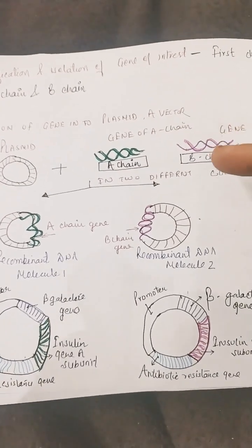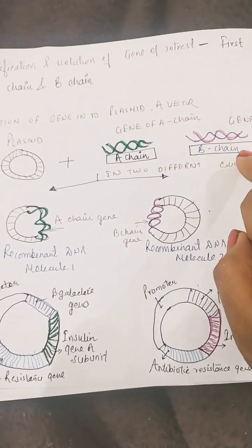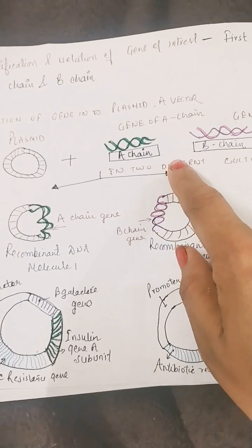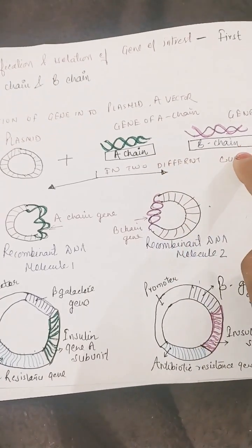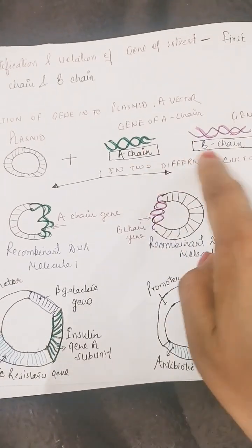it start? You can see we have to identify gene of interest for A chain and gene of interest for B chain, because we know that in insulin there are two chains: A chain and B chain. A chain consists of 21 amino acids and B chain consists of 30 amino acids. So what we have to do is incorporate these two